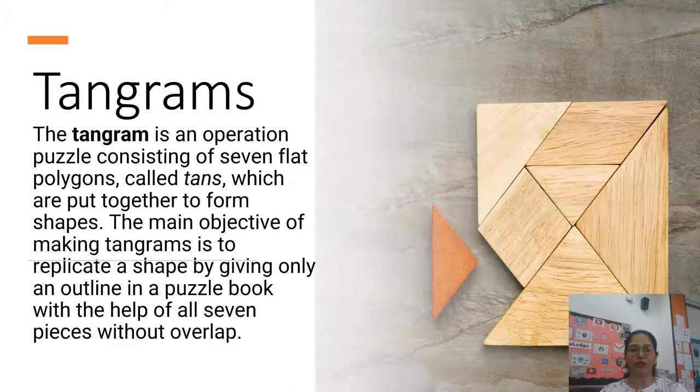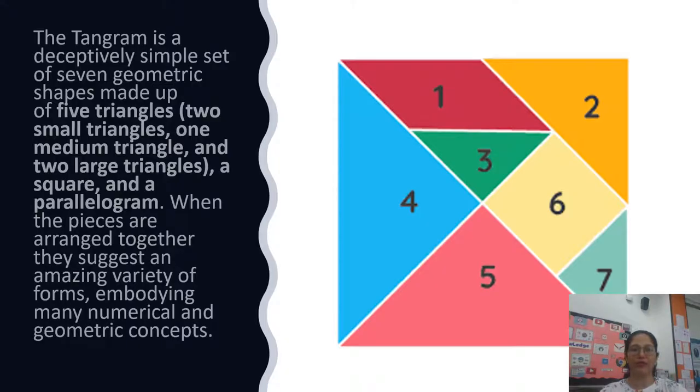So here in the picture you can see there are seven wooden pieces. It can be wooden, it can be paper, or it could be plastic. A tangram is a deceptively simple set of seven geometric shapes made up of five triangles: two small triangles, one medium triangle and two large triangles, a square and a parallelogram.